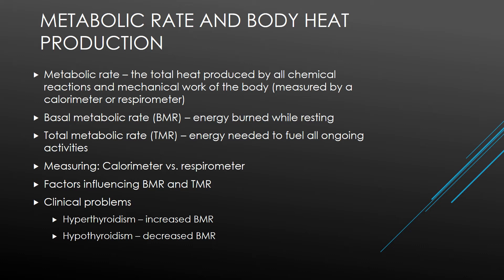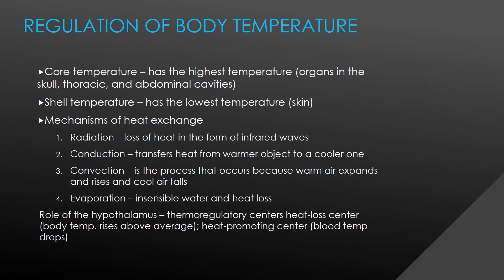Clinical problems: hyperthyroidism is increased BMR and hypothyroidism is decreased BMR. Core temperature is the highest temperature found in organs of the skull, thoracic, and abdominal cavities. Shell temperature is the lowest temperature, which can be found in the skin. Mechanisms of heat exchange: radiation is loss of heat in the form of infrared waves; conduction is transfer of heat from a warmer object to a cooler one; convection is the process that occurs because warm air expands and rises and cool air falls; evaporation is insensible water and heat loss. Role of the hypothalamus.